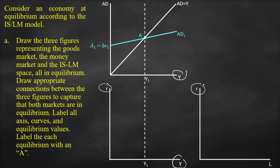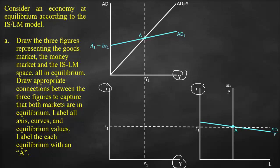In the money market, we draw the real money supply as a vertical line and the downward money demand curve. The point of intersection is the equilibrium, which we label as point A. We then draw a horizontal dotted line to reflect the equilibrium real interest rate in both the money market and the ISLM model.